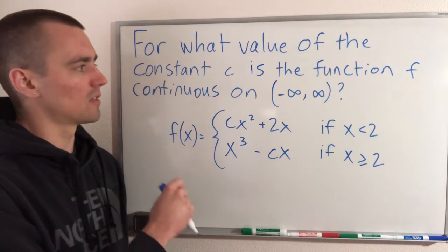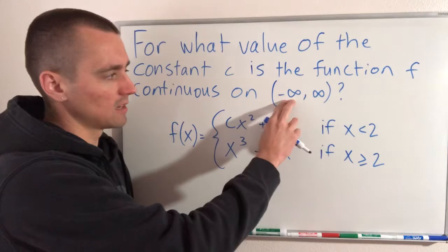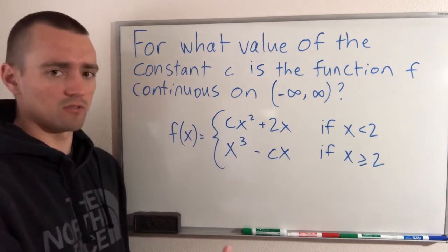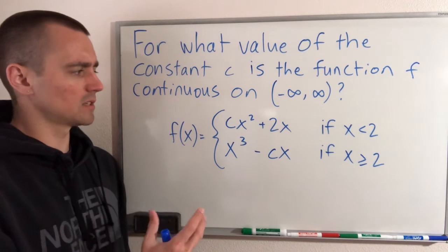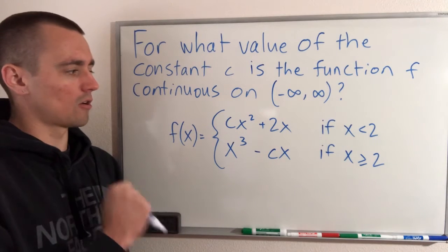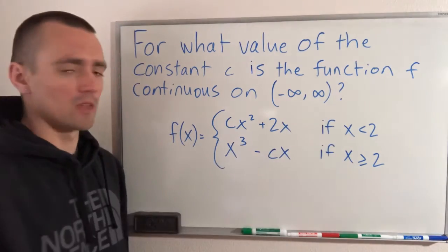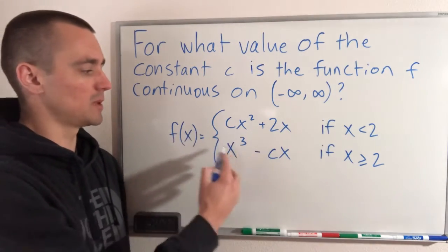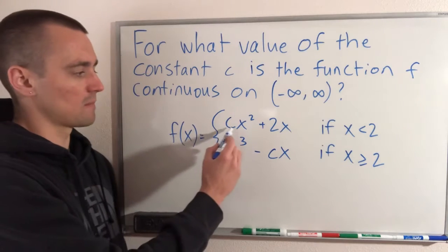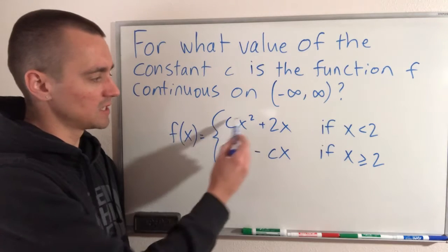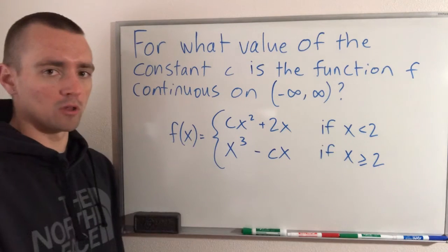So in order to make sure that this function is continuous on negative infinity to infinity, which is the same as saying all real numbers or continuous everywhere, we basically just need to make sure that our function is continuous at x equals 2. And the reason for that is if we look at each of these pieces individually, just consider them by themselves for a second. No matter what our constant c is, each of these functions on their own would be a polynomial.